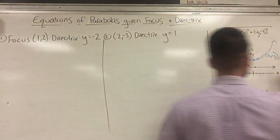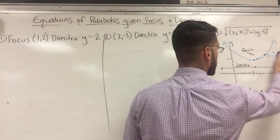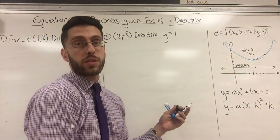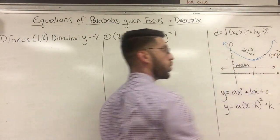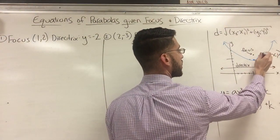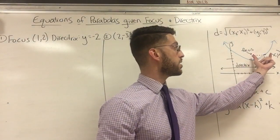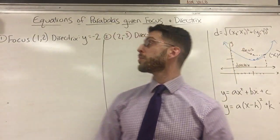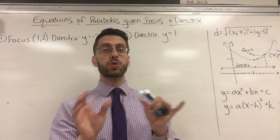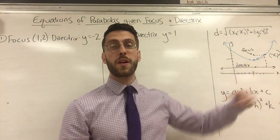If I take any random point (x, y) on the blue curve, it should be the same distance to the focus and to the directrix. The distances aren't drawn to scale, but mathematically this distance should equal that distance. That's why you need the distance formula. You set the distance from (x, y) to the focus equal to the distance from (x, y) to the directrix.